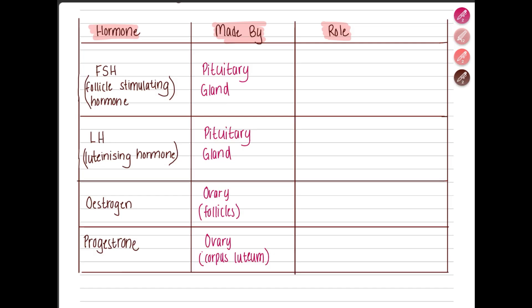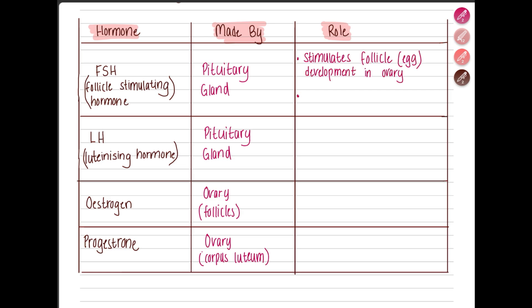FSH and LH are used to stimulate the ovum, whereas estrogen and progesterone are used to maintain or create the uterus lining. FSH stimulates the development of the follicle in the ovary and also stimulates estrogen production. LH is responsible for causing ovulation — the release of the egg from the ovaries into the oviduct.